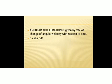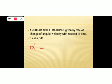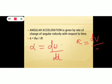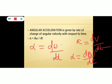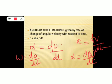Angular acceleration is denoted by alpha (α) and equals dω/dt. Just as linear acceleration A equals the rate of change of linear velocity with time, angular acceleration α equals the rate of change of angular velocity with time. So angular velocity ω = dθ/dt, and angular acceleration α = dω/dt.